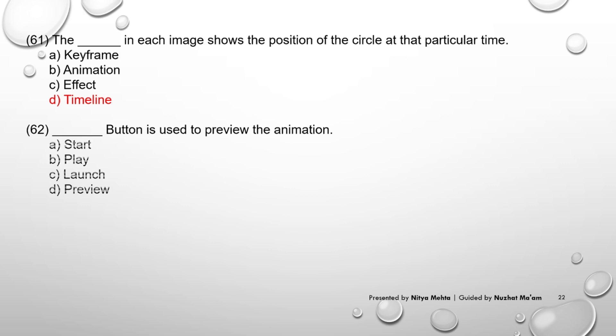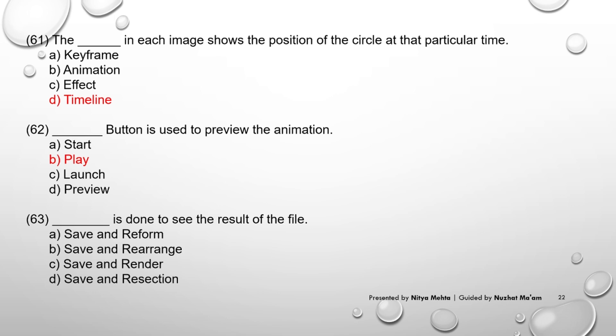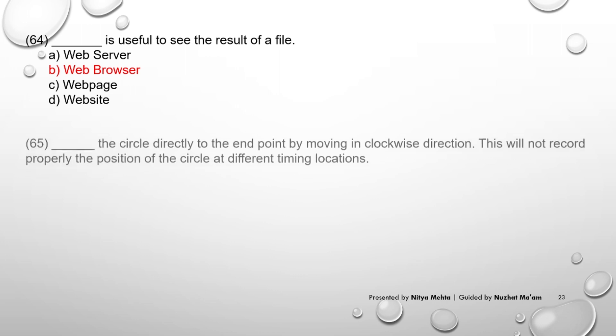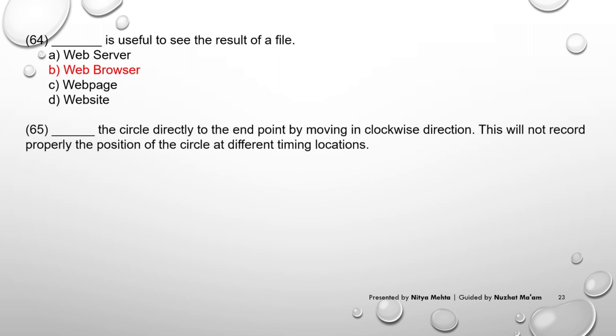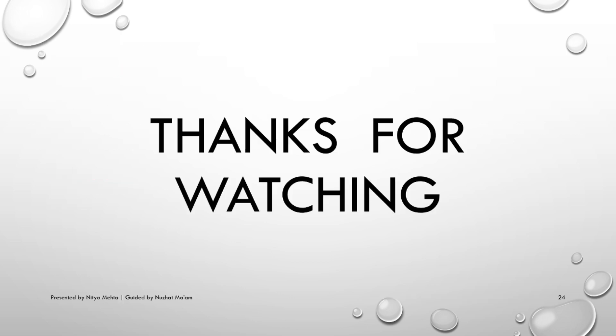Number 61. The dash in each image shows the position of the circle at that particular time. Answer D. Timeline. Number 62. Dash button is used to preview the animation. Answer B. Play. Number 63. Dash is done to see the result of the file. Answer C. Save and render. Number 64. Dash is useful to see the result of a file. Answer B. Web browser. Number 65. Dash the circle directly to end point by moving in clockwise direction. This will not record properly the position of the circle at different timing location. Answer B. Do not drag. That's all.